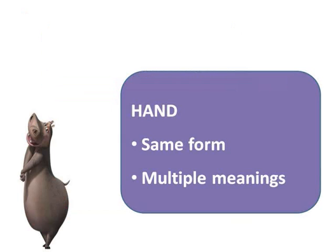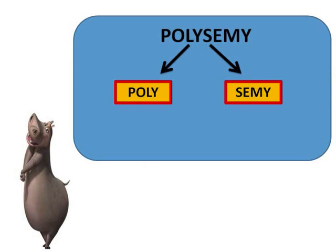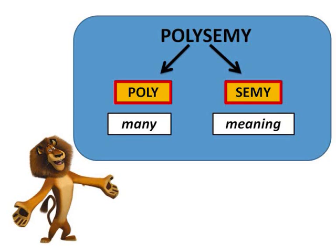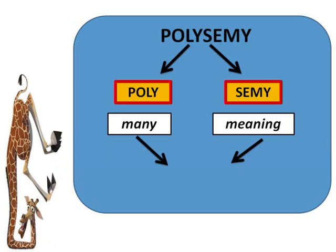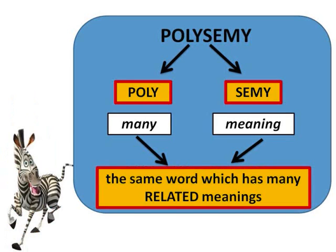As you can see, children, 'hand' has the same form but it has multiple meanings. When we have the same form of a word with multiple meanings that are related, it is called polysemy. In Greek, 'poly' means many and 'semi' means meaning. Together, polysemy means 'many meanings.' So a word is considered polysemous if it has the same form — as in same spelling — and it has meanings which are related.